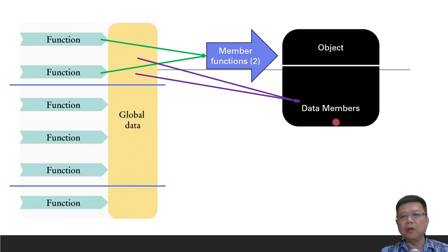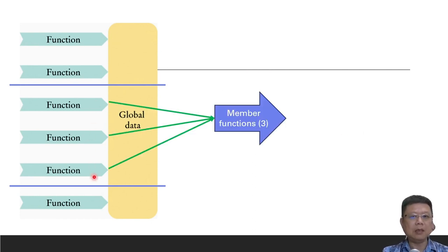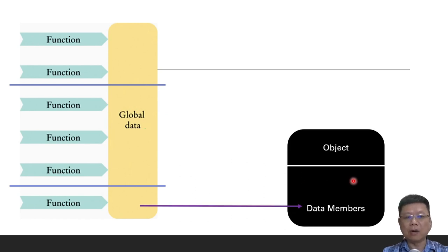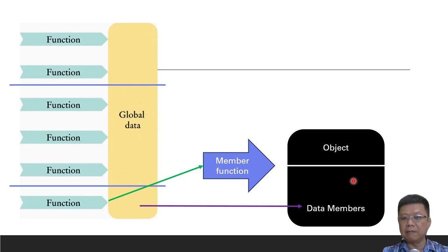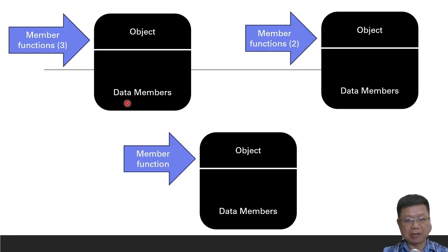We have two functions and their related variables, which will be named as data members. When we combine them, we call it one object. In the second diagram, we refer to three functions, group them as member functions, and identify the variables related to those three functions — grouped into one object. And lastly, we have one function with its data members, grouped as one object.